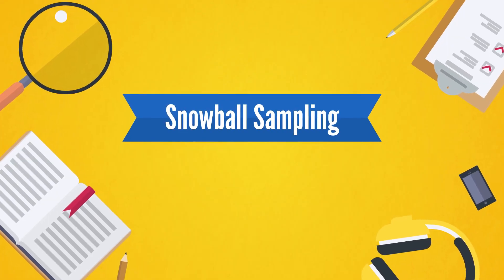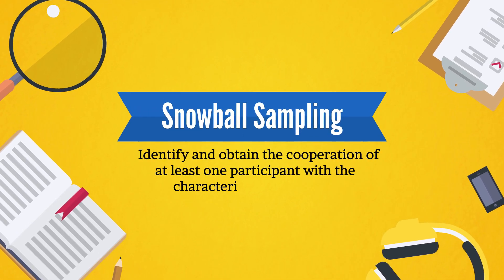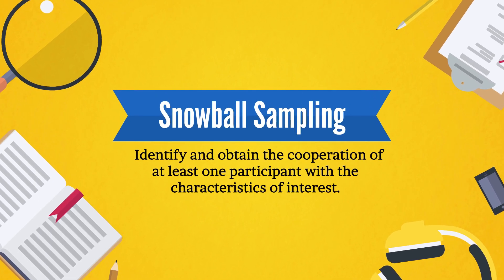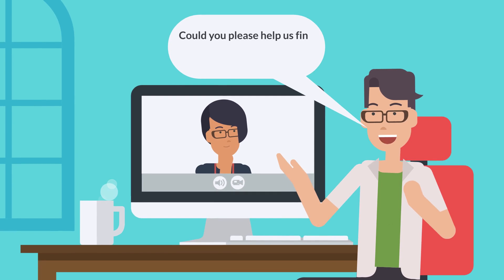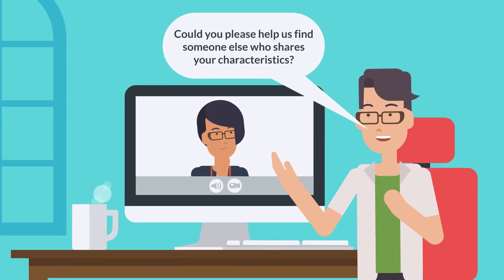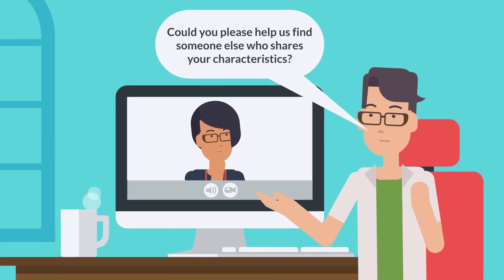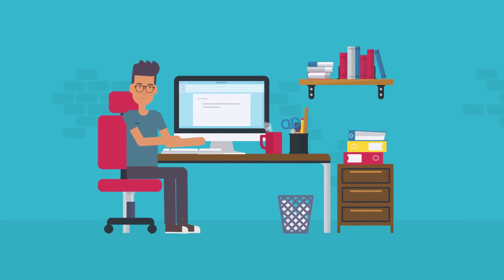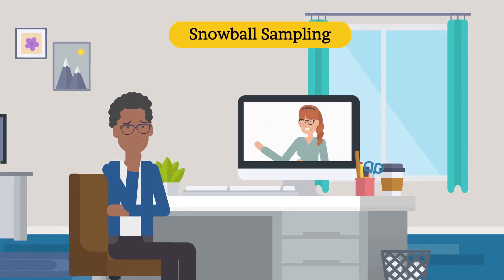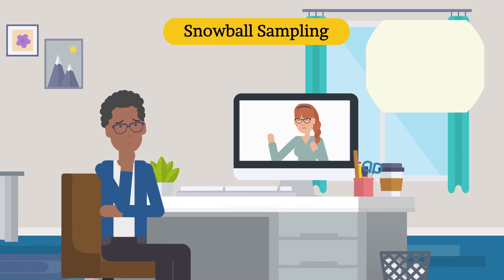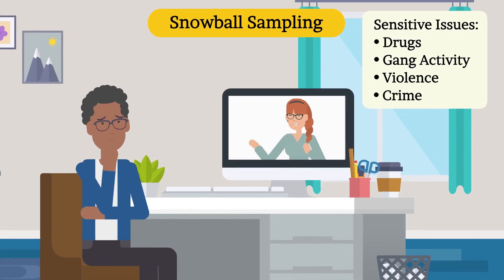Snowball sampling calls for the researcher to identify and obtain the cooperation of at least one participant with the characteristics of interest. After collecting data from that participant, the researcher asks them to identify and seek the cooperation of someone else with the same characteristics. This is repeated until the researcher has enough data for their purpose. Snowball sampling is appropriate when the research involves sensitive issues, such as those related to drugs, gang activity, violence, and crime.